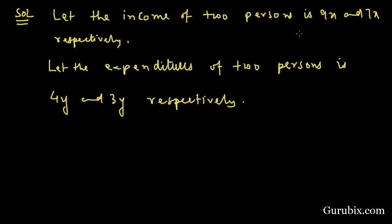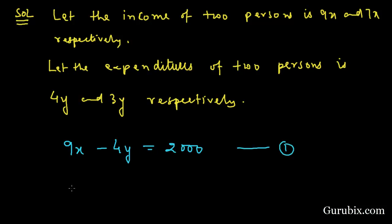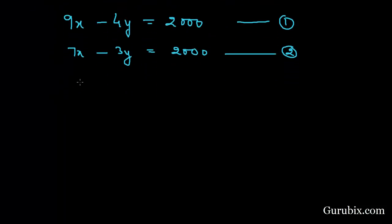It is given that each person manages to save rupees 2000 per month. So if the first person earns rupees 9x and expends rupees 4y, then he saves rupees 2000. This is our first equation. Similarly, if the second person earns 7x and expends 3y, he is also able to save rupees 2000. This is equation number 2.